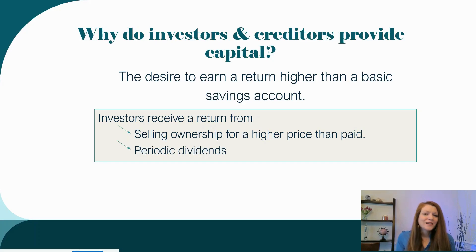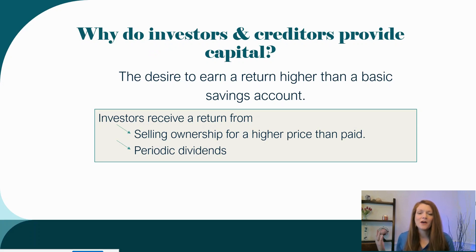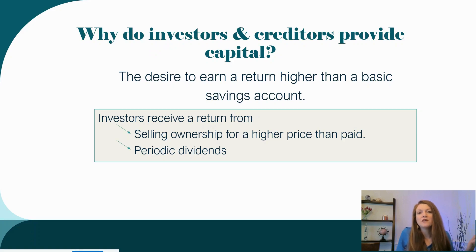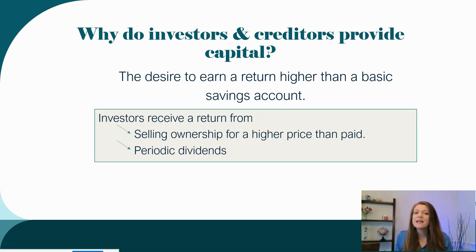Why do investors and creditors provide that capital? They want to make a return — higher than what they would get in a basic savings account. If you just put your money in a savings account, you might get between 0.01% and maybe three or four percent interest right now. But investors can make much more. If investors put money into the company, they are hoping to be able to sell that investment to another investor later down the line and make money off of it. If you buy a share of stock, the idea is you buy it for a low price today and sell it for more — maybe a year from now, maybe ten years from now.